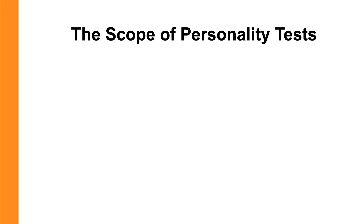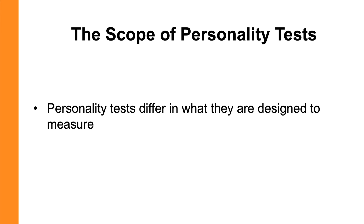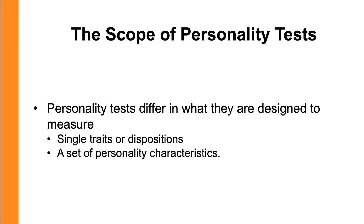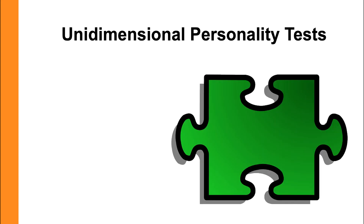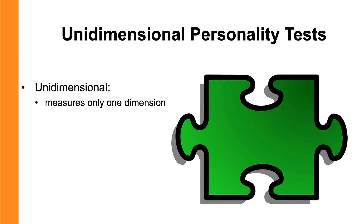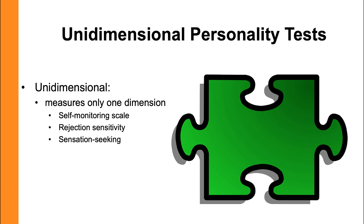Personality tests can also greatly differ in terms of what they're designed to measure. You can have personality tests that measure single traits or characteristics, and there are inventories designed to measure sets of personality characteristics. Tests designed to measure a single trait or disposition are called unidimensional — they are only measuring one dimension or characteristic of personality. These include scales like the self-monitoring scale, rejection sensitivity, or sensation seeking.